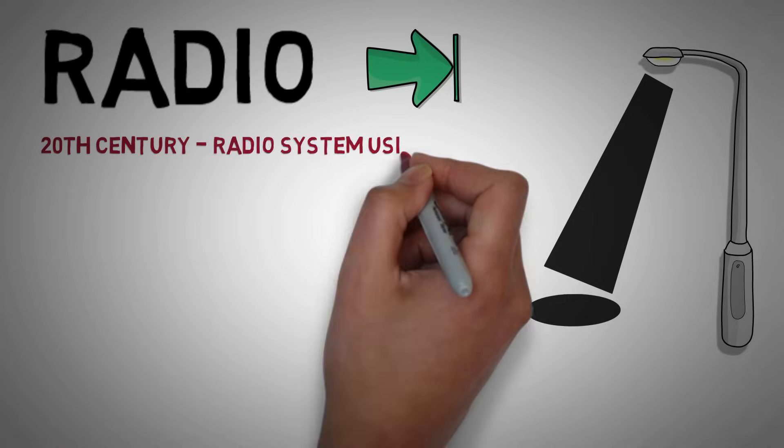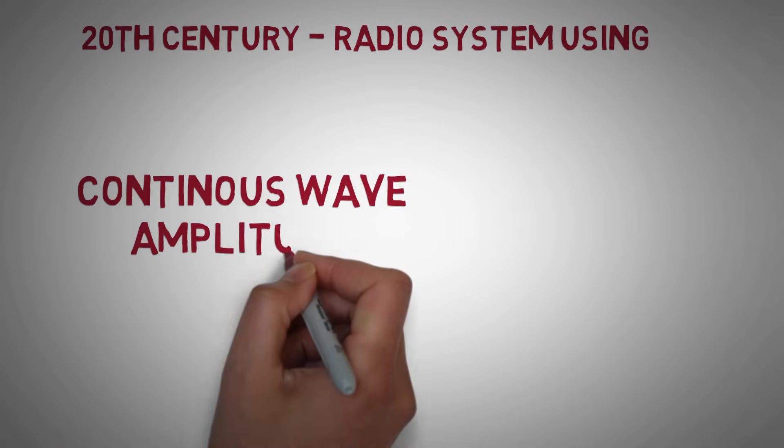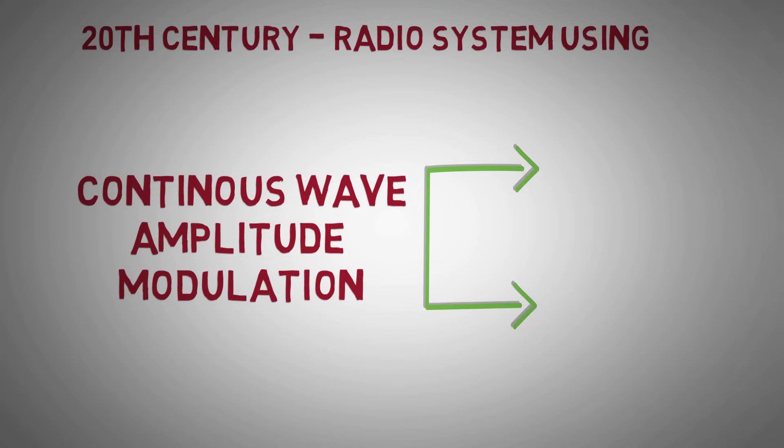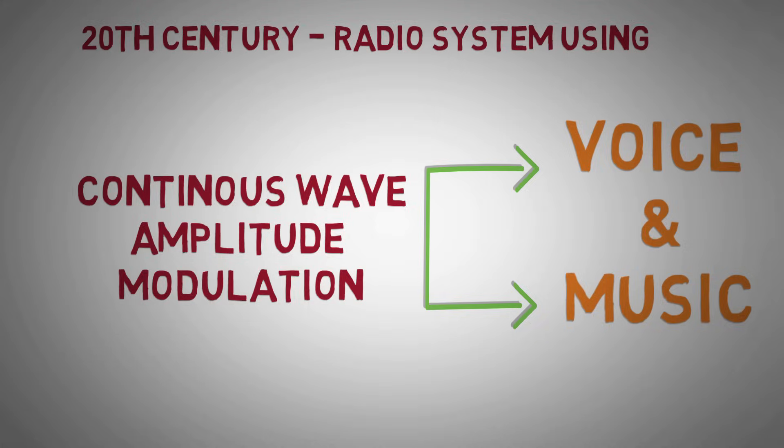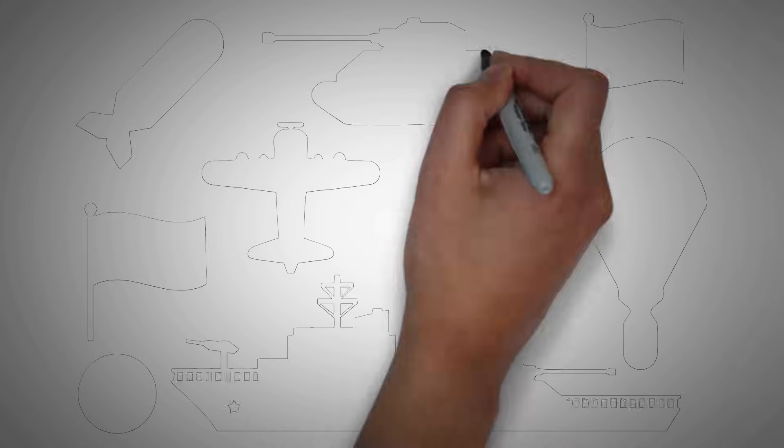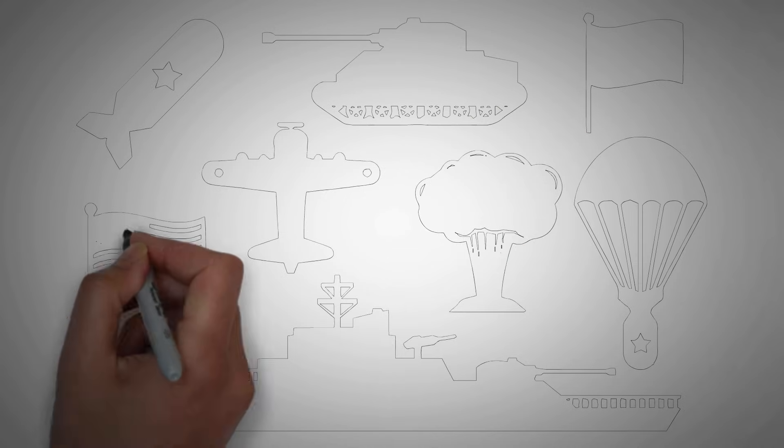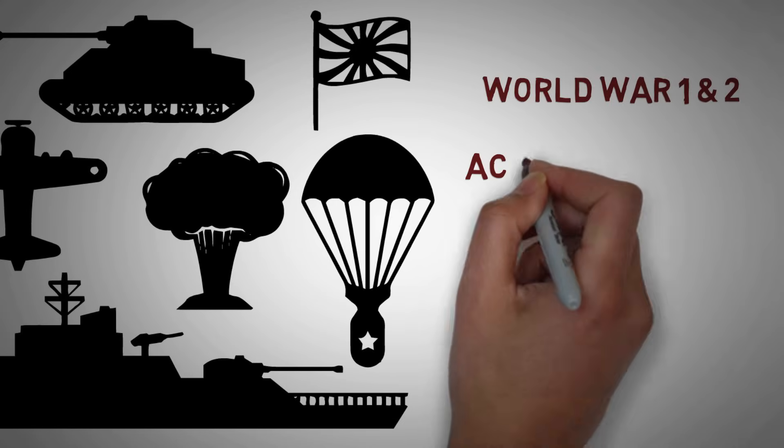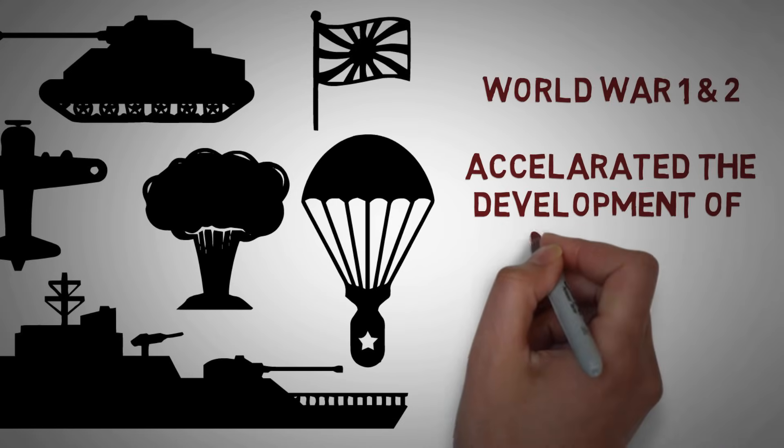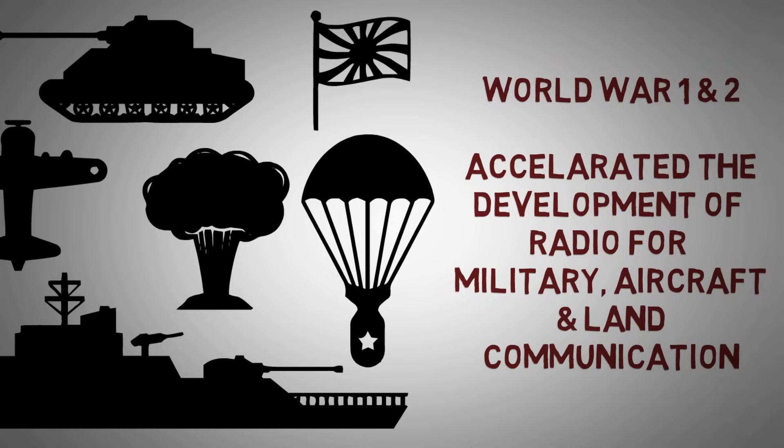Early 20th century radio systems transmitted messages using continuous waves only. Amplitude modulation was demonstrated for the transmission of voice and music but with little success. World War I accelerated the development of radio for military communication. After the war commercial radio broadcasting began in 1920 and was a big hit. World War II again accelerated the development for wartime purposes for aircraft and land communication.